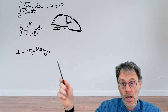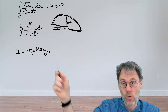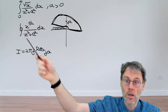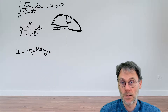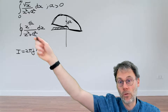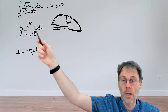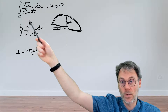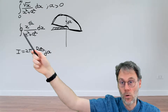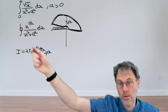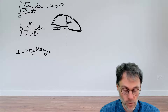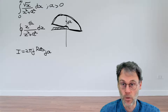By the way, ja is of course a simple pole, because it comes from this denominator. Don't be confused and say that ja is a branch point simply because we have a square root in the numerator. It's not because you have a square root in the numerator that other singularities in the denominator, which have nothing to do with the square root, also become branch points. Don't confuse branch points and simple poles here.